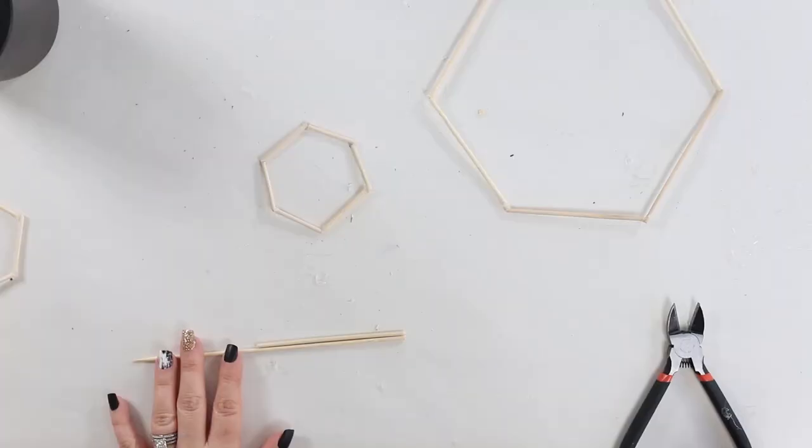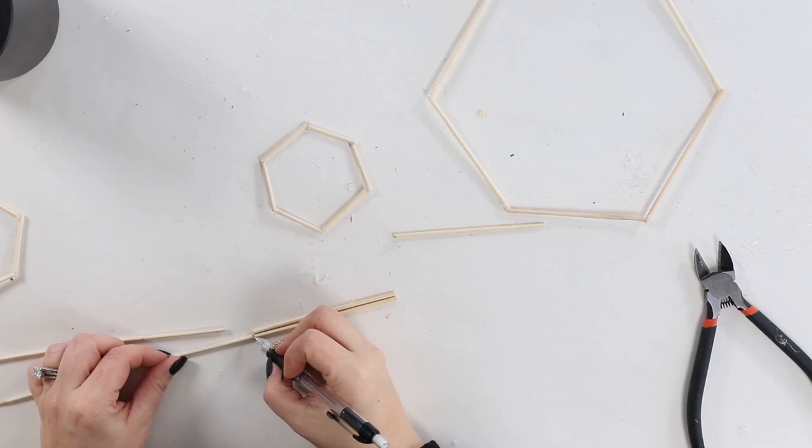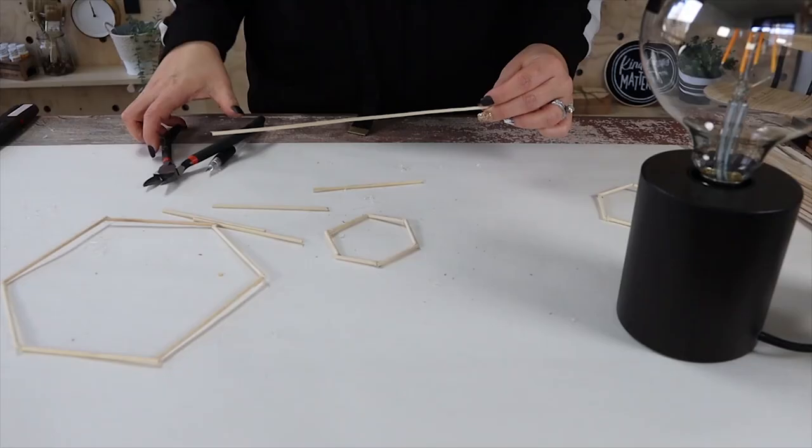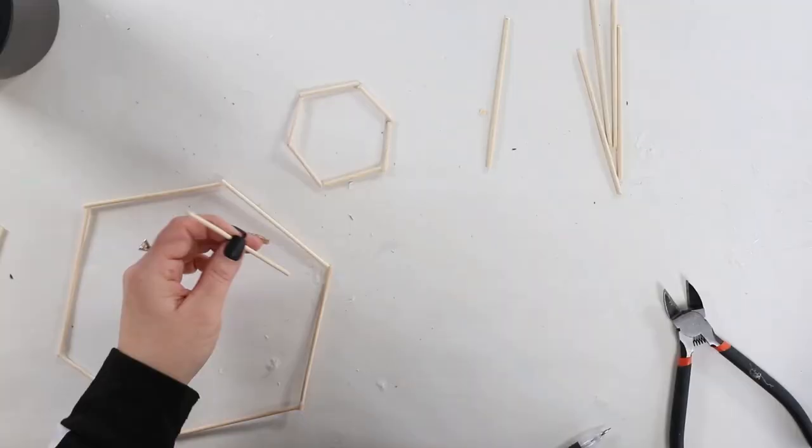I'm going to be cutting some more skewers that I'm going to be using as support pieces. So I'm going to start by gluing them to the corners of my hexagon, and then I'm going to attach it to the bigger hexagon.